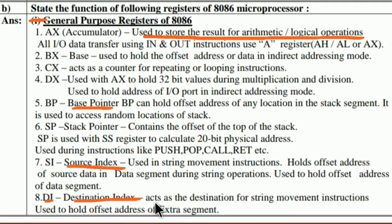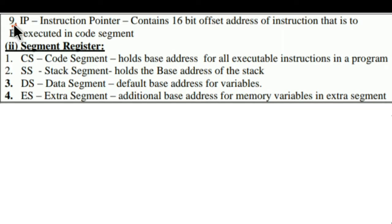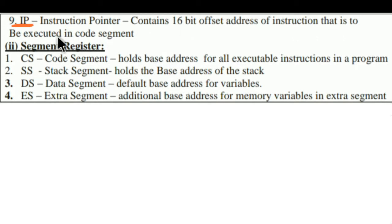The eighth is DI, which is known as destination index. It acts as the destination for string movement instructions and is used to hold the offset address of the extra segment. The ninth is IP, the instruction pointer, which contains the 16-bit offset address of the instruction that is to be executed in the code segment.